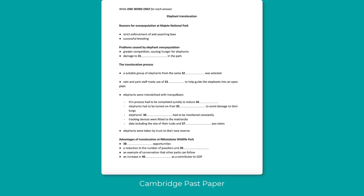Then they explain how they immobilised the elephants. As you can imagine, this was tricky. They had to get the right dose of tranquiliser and dart the elephants as they were running around. The prompt word there is 'quickly,' and the question sheet says 'this process had to be completed quickly to reduce something.' We're looking for a collocation with 'reduce.' Here's what they say: 'This had to be done as quickly as possible so as to minimise' — minimise is the synonym for reduce — 'the stress caused.' So the answer is: to reduce stress. It's a fixed collocation.